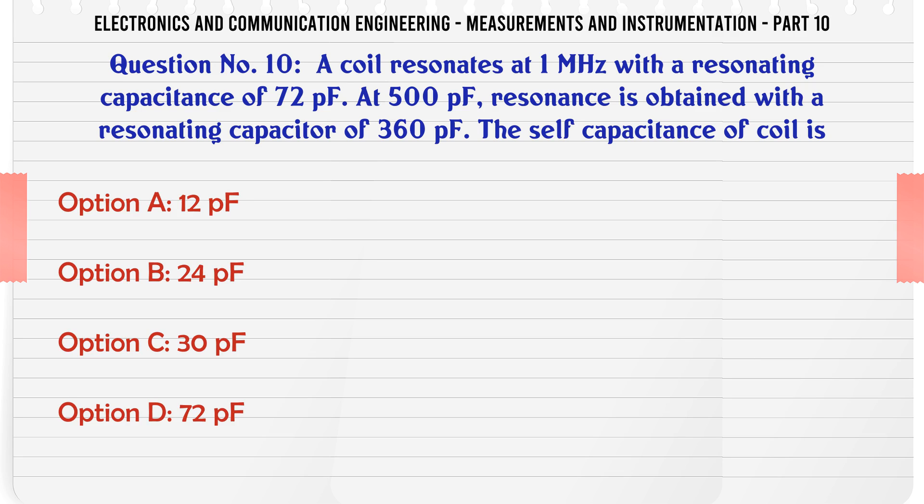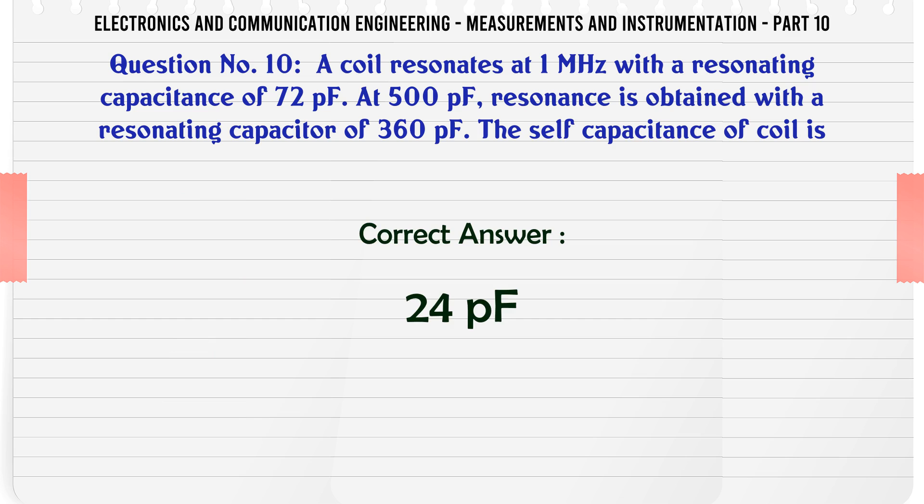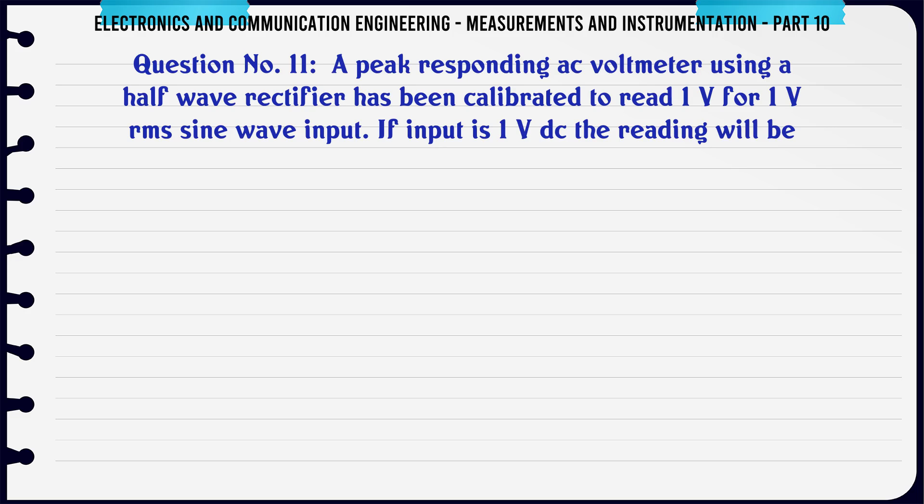A coil resonates at 1 MHz with a resonating capacitance of 72 pF. At 500 pF resonance is obtained with a resonating capacitor of 360 pF. The self-capacitance of coil is: A) 12 pF, B) 24 pF, C) 30 pF, D) 72 pF. The correct answer is 24 pF.